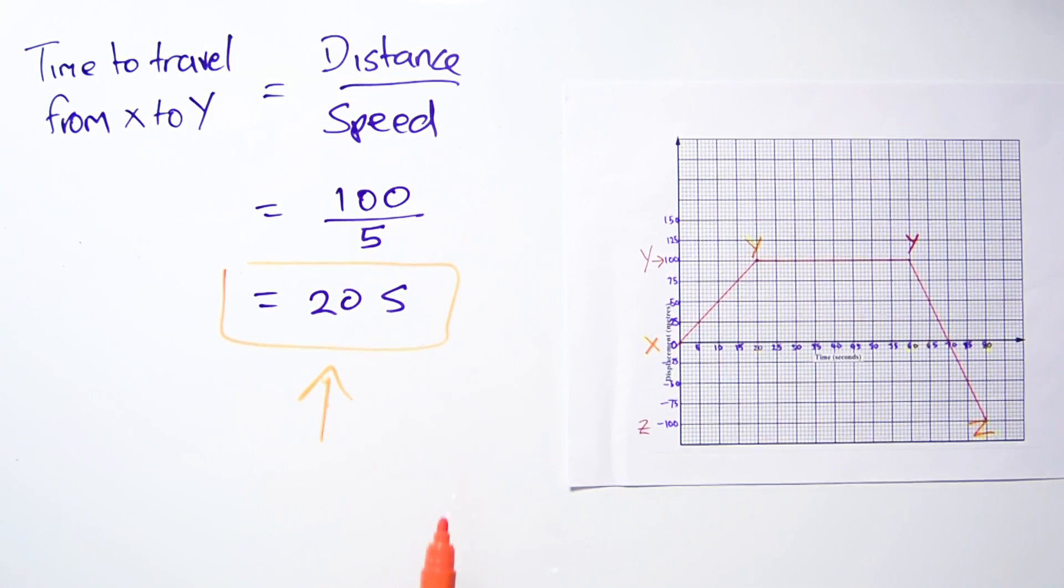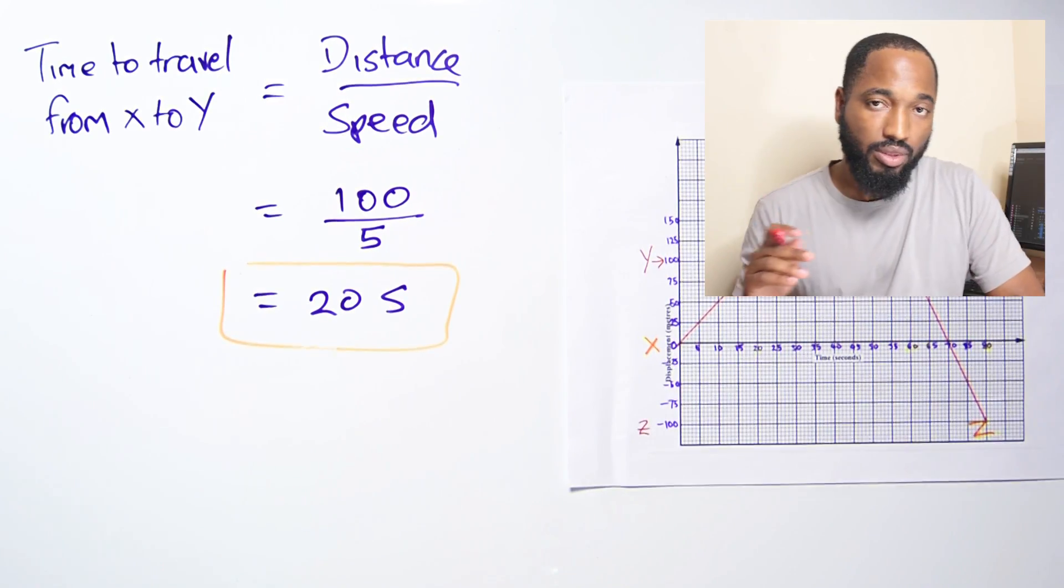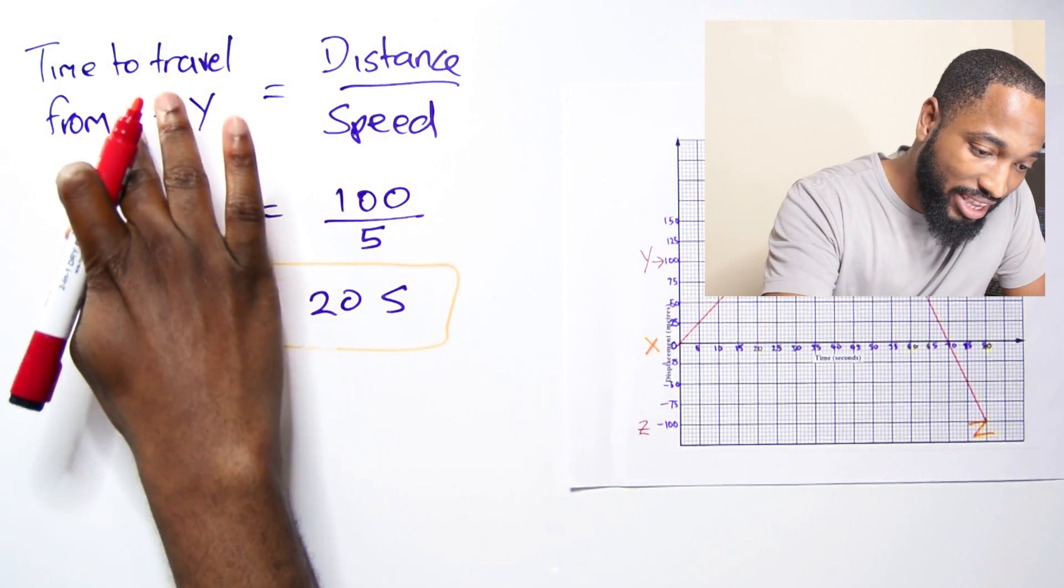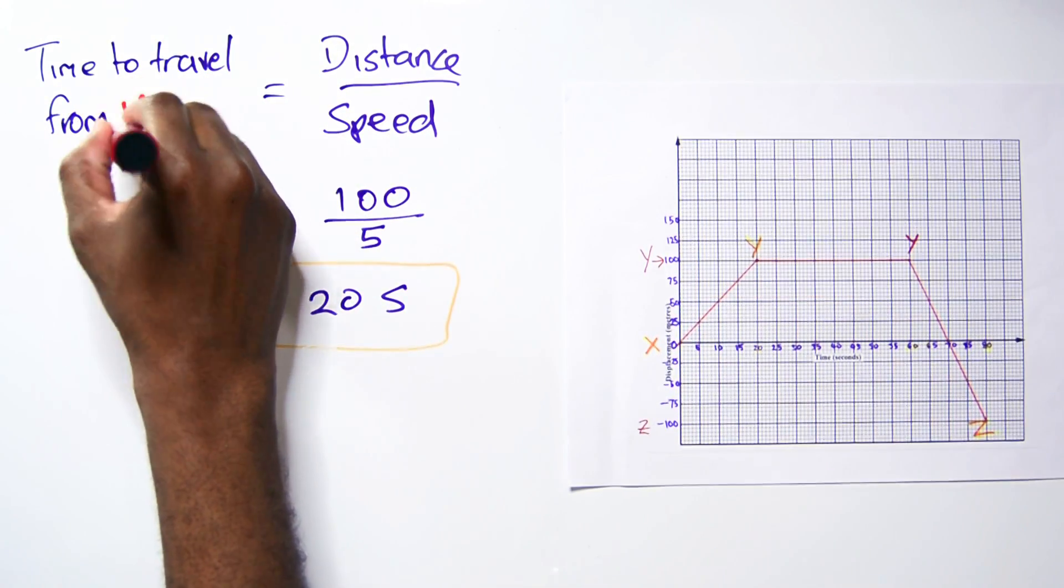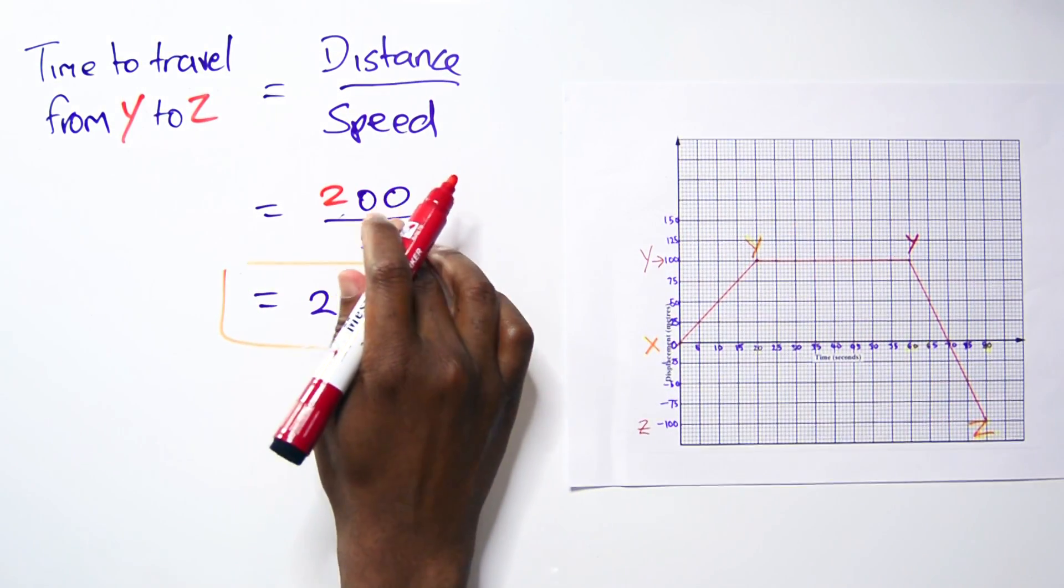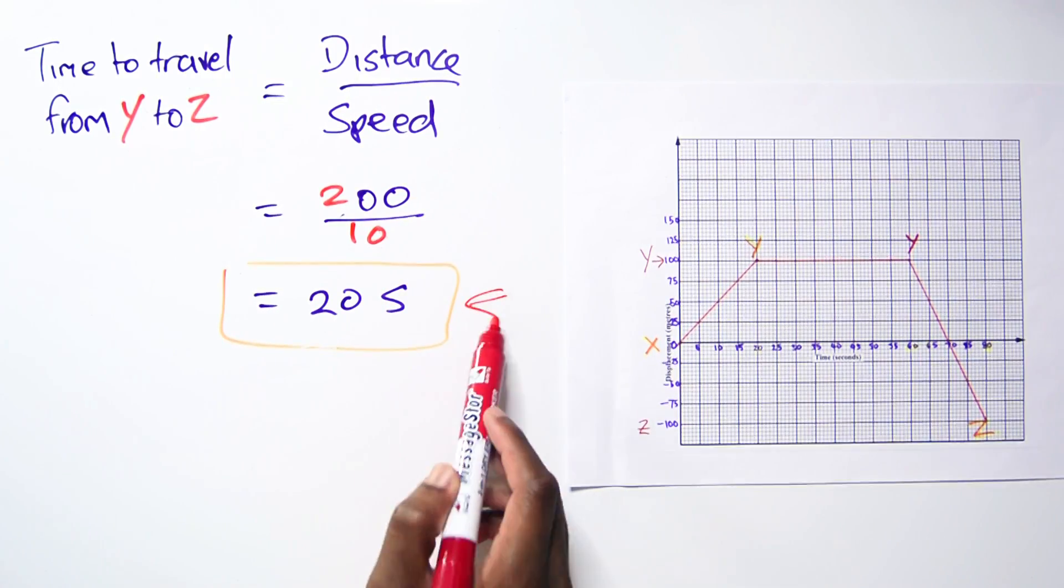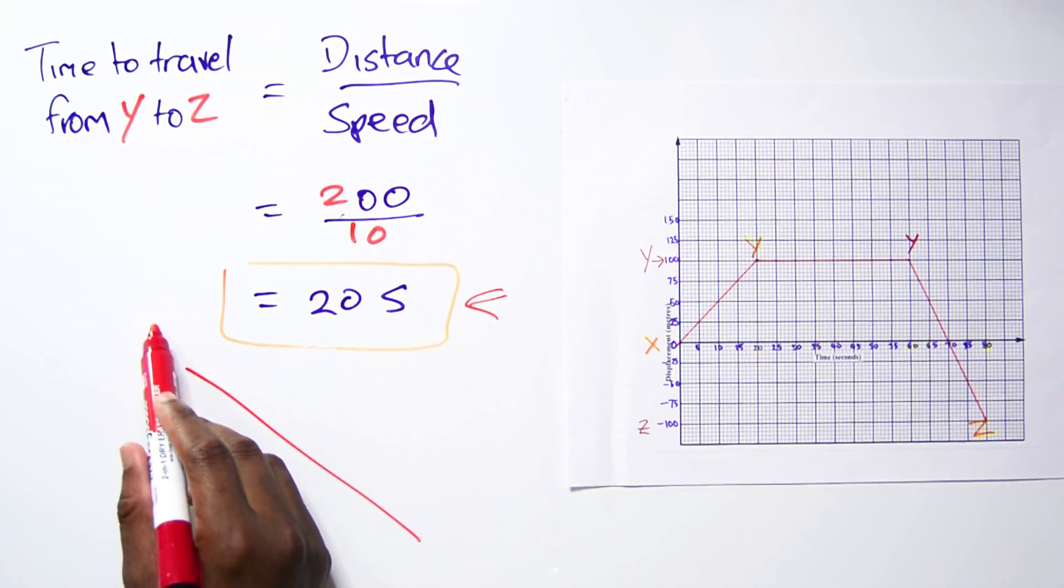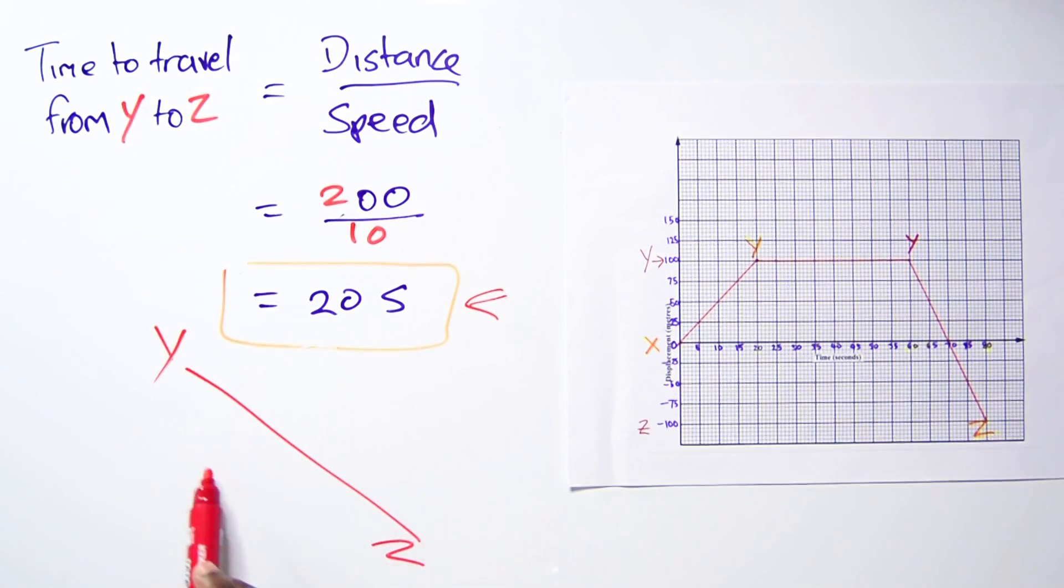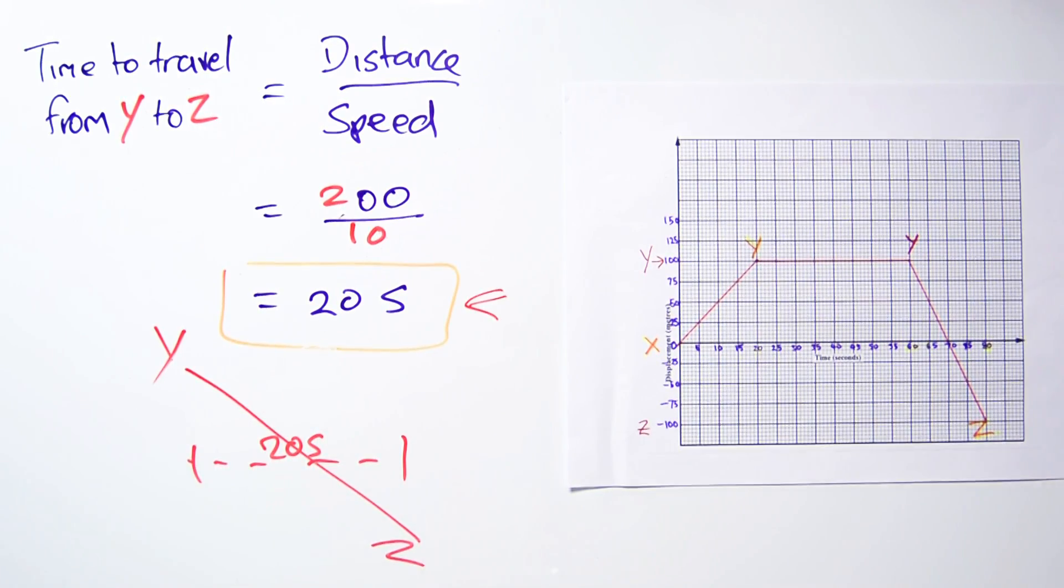This means the time taken to go from X to Y in the graph lasted 20 seconds. We also need to find the time taken to go from Y to Z. When we plug in the values, we get the same answer: another 20 seconds. It means Y to Z is a little steeper in the graph.